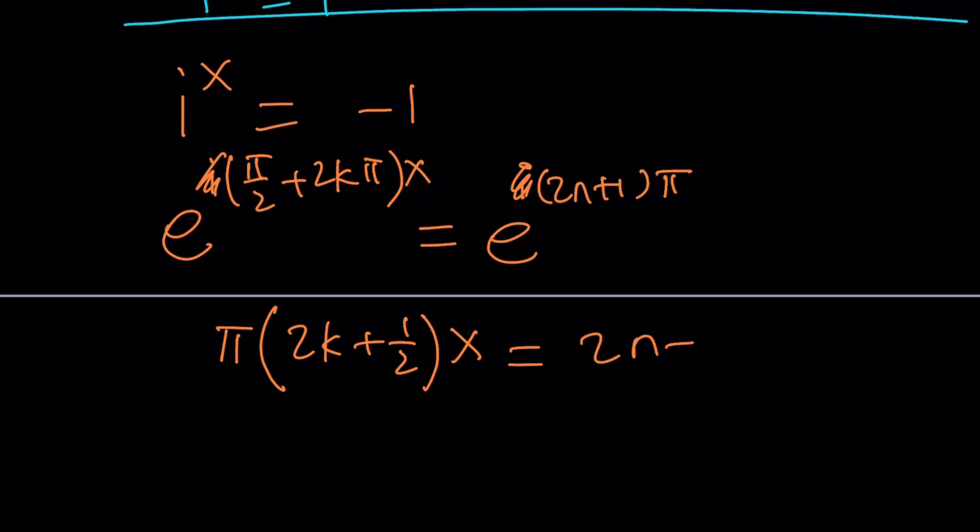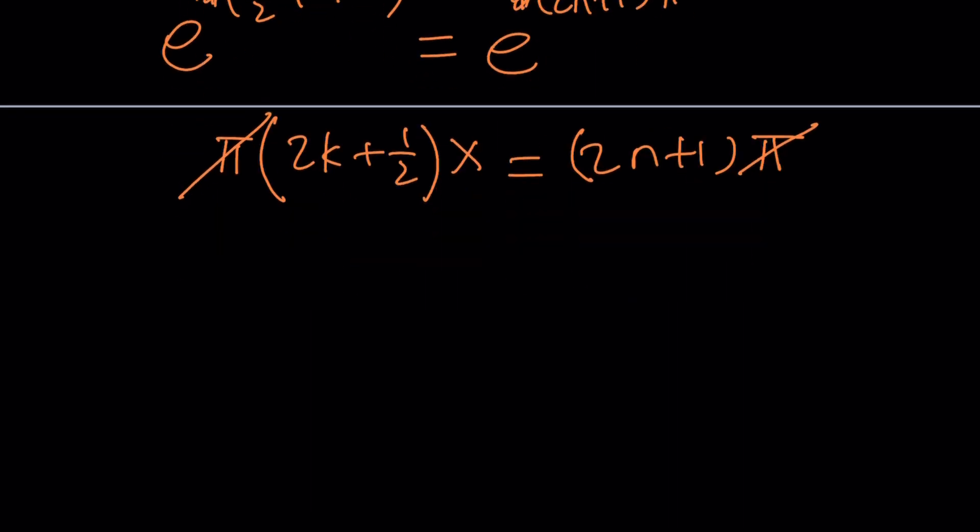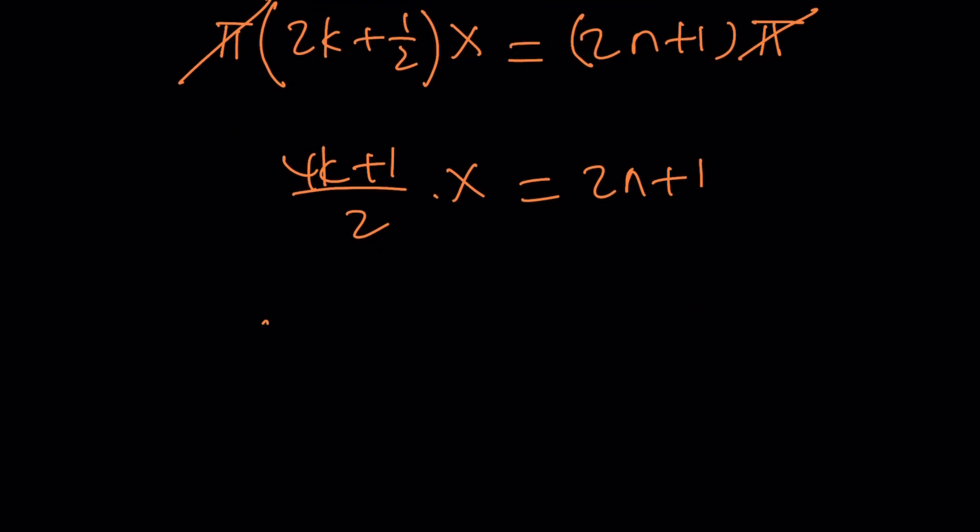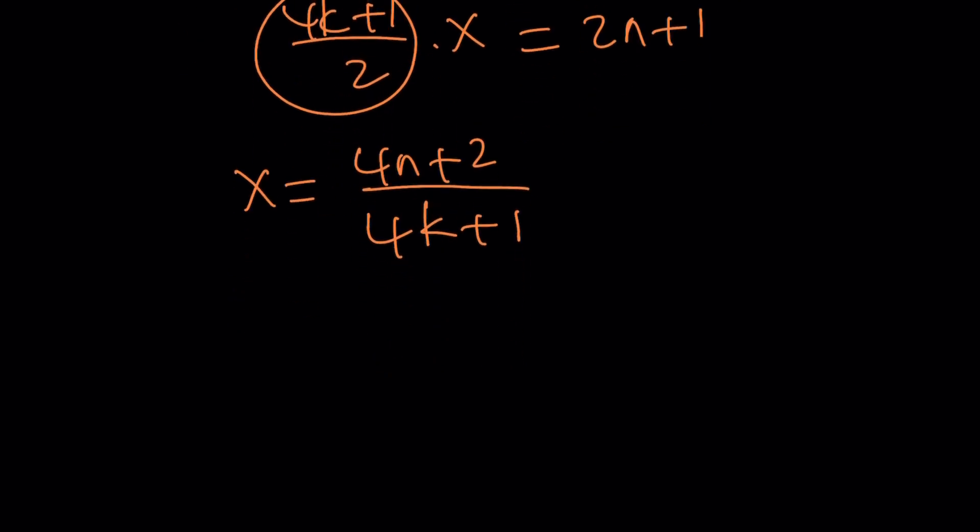Now this is going to give us the following. After getting rid of the pi's and dividing both sides by this, we're going to get the answer. But let's go ahead and make a common denominator here, 4k plus 1 divided by 2 times x equals 2n plus 1. And if you go ahead and multiply both sides by the reciprocal of this number, x is going to become 4n plus 2 divided by 4k plus 1. So it looks like we got an answer that is more complicated, not complex.